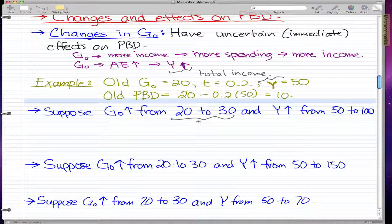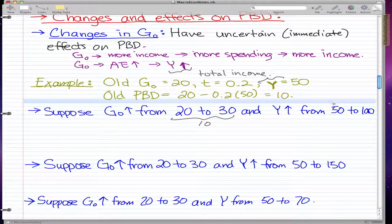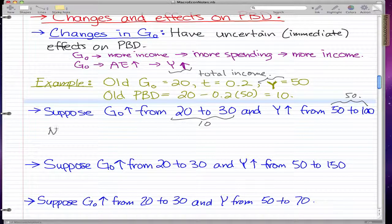Suppose that the government increased their spending from 20 to 30, so there's an increase of 10, and that increased the total income from 50 to 100, so an increase of 50.